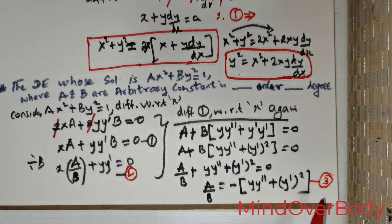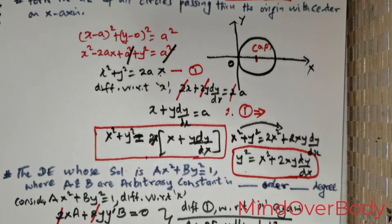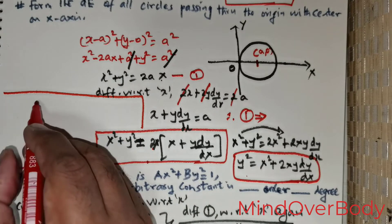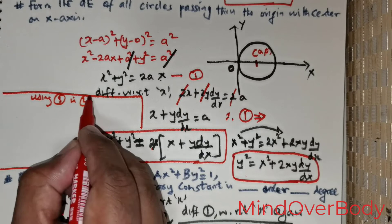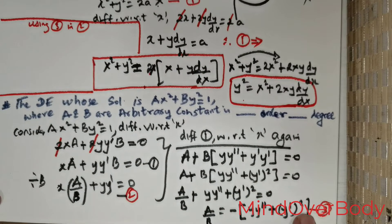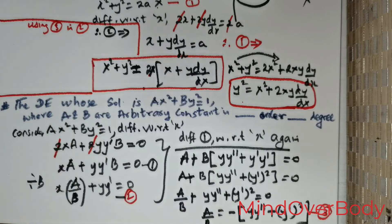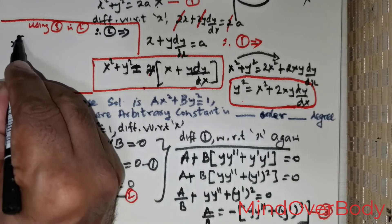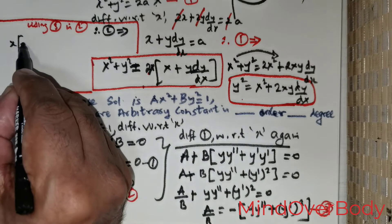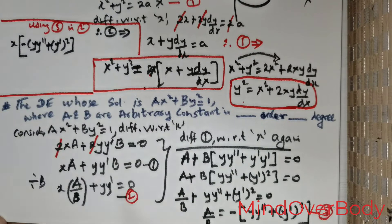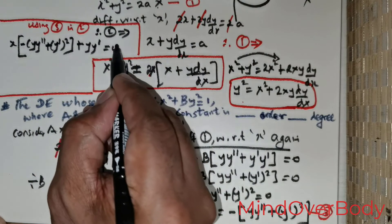Using equation 3 in equation 2: substituting a/b = −(y·y'' + (y')²) into (a/b)·x + y·y' = 0 gives x·(−(y·y'' + (y')²)) + y·y' = 0, which simplifies to −x·(y·y'' + (y')²) + y·y' = 0.